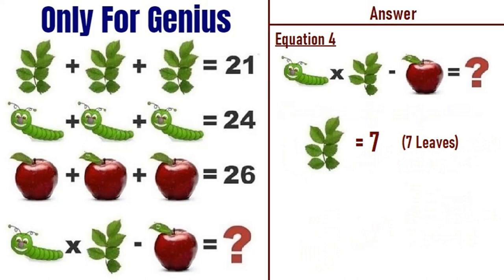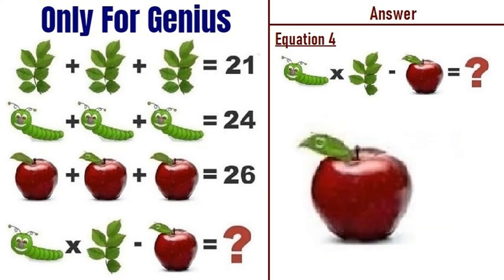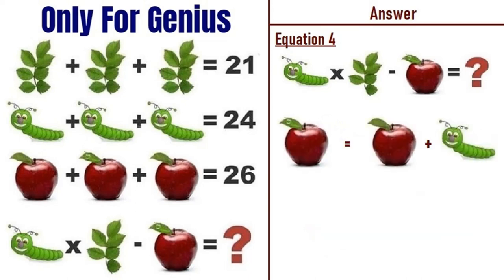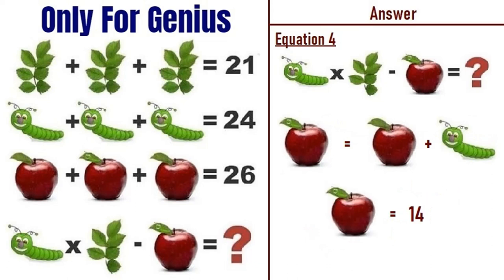Similarly, the leaves in equation one has seven leaves so it equals 7, but the leaves in equation four has six leaves so it equals 6. Also, the apple in equation four has a caterpillar on its leaf, so apple with caterpillar equals apple plus caterpillar, which is six plus eight, giving apple-with-caterpillar equals 14.